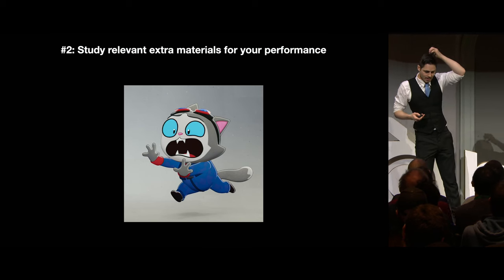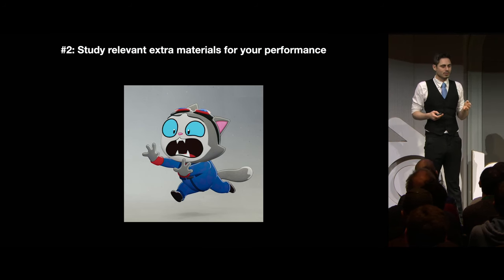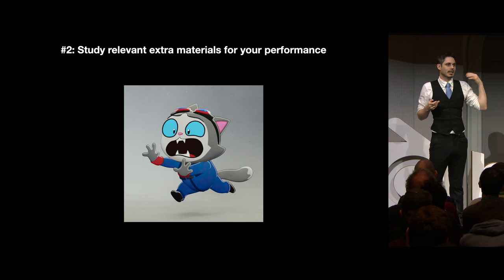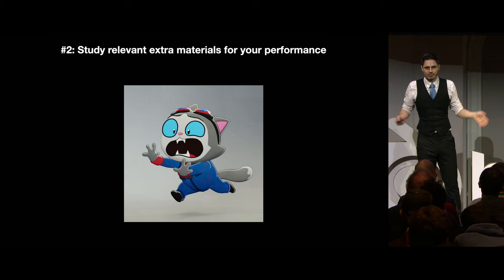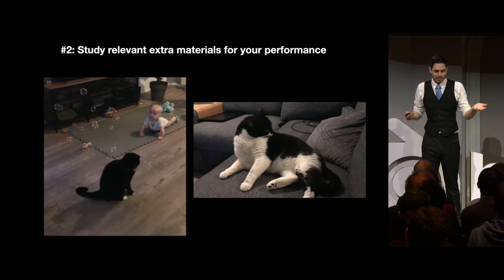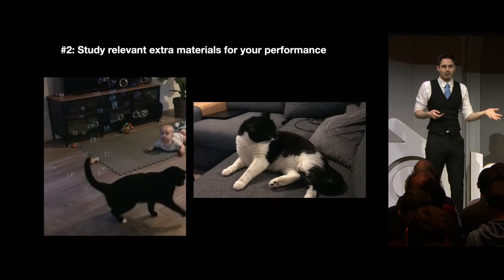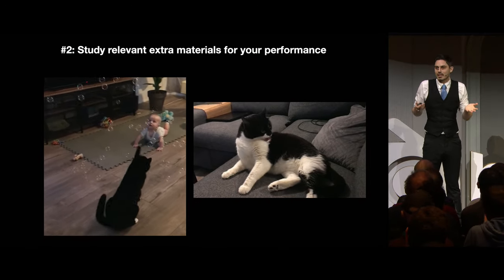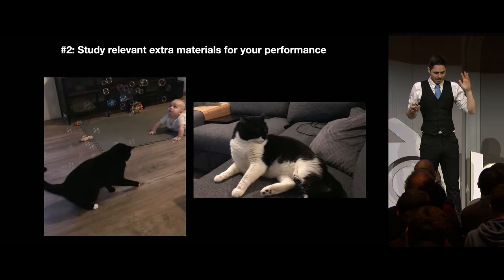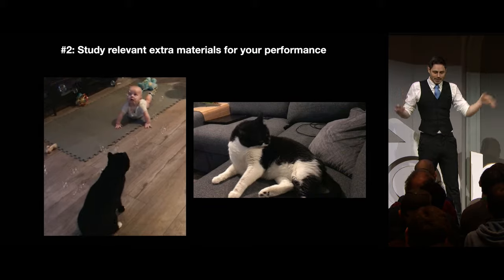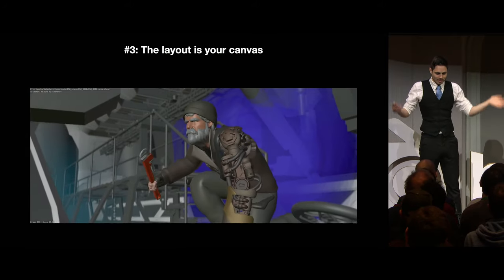Tip two: it is pretty good to also look at any relevant extra materials for your performance. If you have a character you have to animate that is an anthropomorphized cat, this might be a great excuse to go online and look at a lot of videos of cats and look at their mannerisms and little gestures and sprinkle those into your animation. Be aware though — you might end up procrastinating. So be mindful of the time.